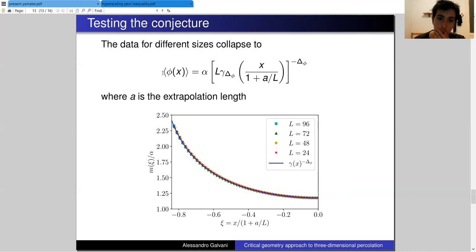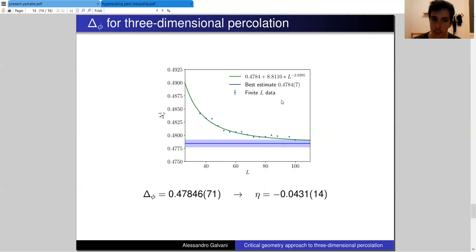Once we have obtained our order parameter, it can be fitted through this function. We have a multiplicative constant to fit and the extrapolation length, a parameter which always appears in simulations with finite systems. And then the more important one is the exponent delta phi, which appears both in the exponent and also in the function gamma itself. We can extract delta phi as a fit parameter.